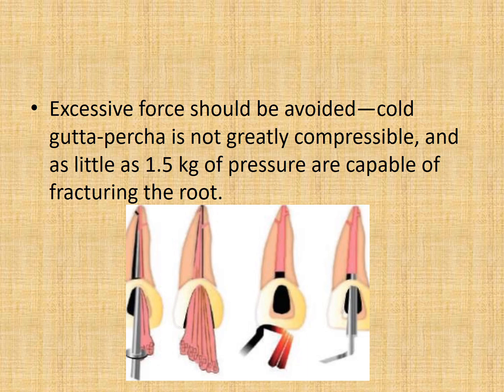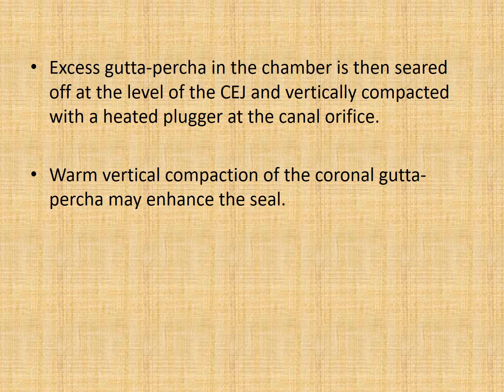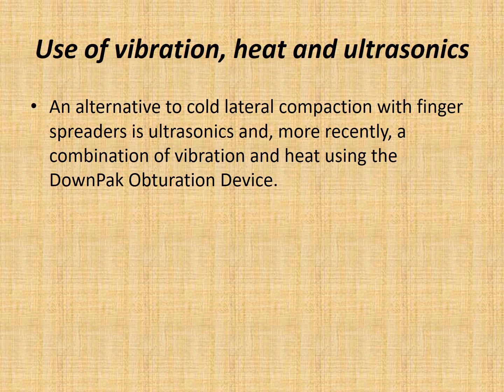Excessive force should be avoided when inserting the spreader. Cold gutta percha is not greatly compressible and as little as 1.5 kg of pressure is capable of fracturing the root. Take extreme caution when using a spreader to create space for the accessory cones. Excess gutta percha in the chamber is then seared off at the level of the cemento-enamel junction and vertically compacted with a heated plugger at the canal orifice. Warm vertical compaction of the coronal gutta percha might enhance the seal.